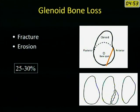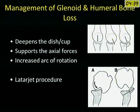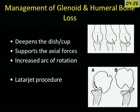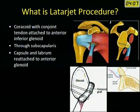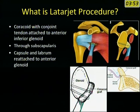A bone loss of more than 25 to 30 percent is significant and bone grafting is advised for these lesions. For humeral bone loss, similar quantitation has not been defined, but what has been defined is the engaging or non-engaging Hill-Sachs lesion. Bone grafting of the glenoid deepens the cup of the glenoid, supports axial forces, and increases the arc of rotation — both for glenoid and humeral bone loss. The procedure is called the Latarjet procedure. In this procedure, the coracoid with its attached conjoint tendon is detached just distal to the coracoclavicular ligament attachment, passed through the subscapularis, and attached to the anterior glenoid, while the capsule and labrum are attached to the original glenoid.